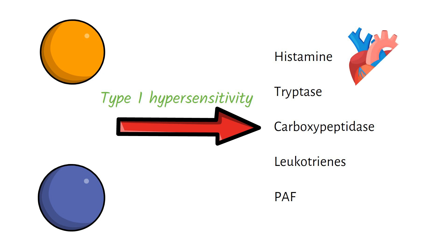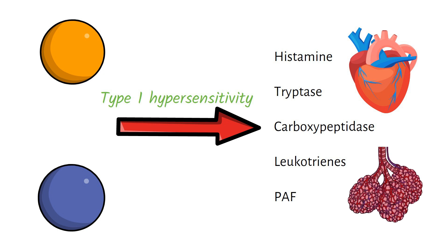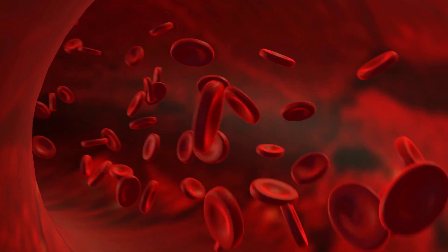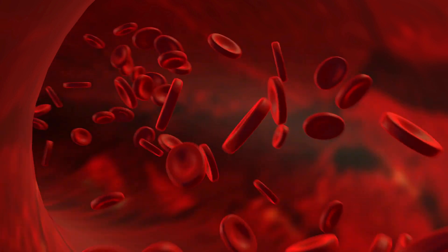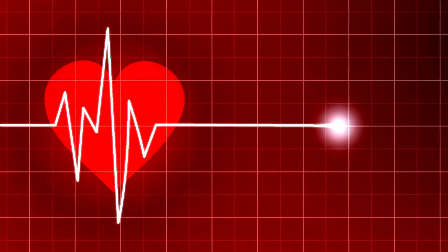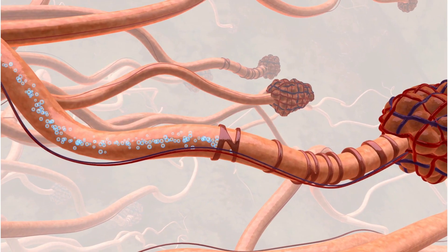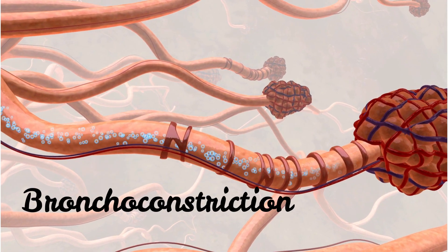Following the chemical mediator release, there will be an increase in vascular permeability and vasodilation. This leads to hypoperfusion of the tissues. The body will respond to these changes by increasing the heart rate and cardiac contraction. Leukotrienes and platelet activating factors will act as bronchoconstrictors.